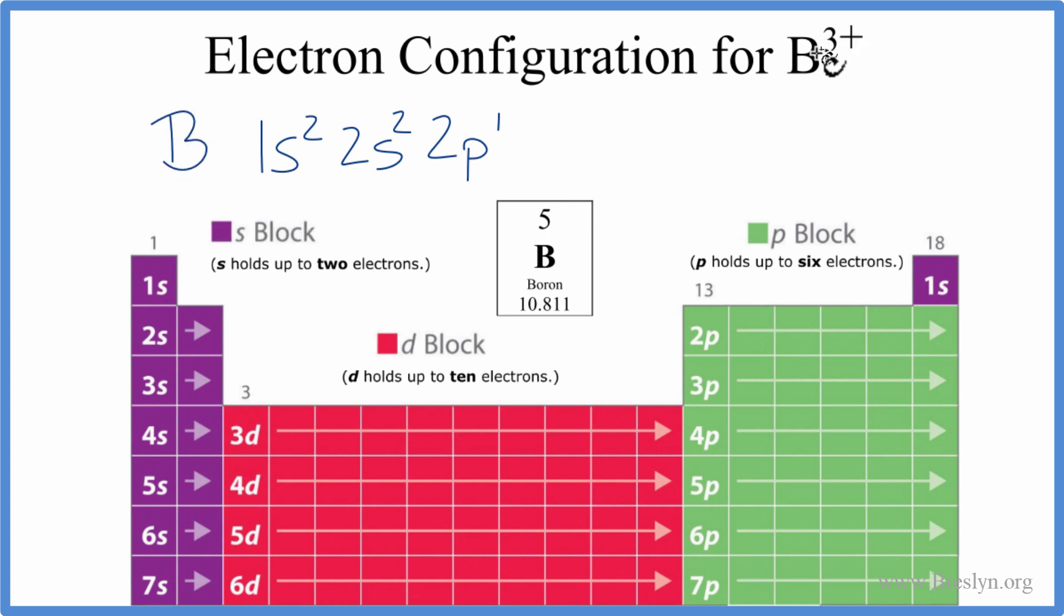But we want to do B3+, the boron ion. So, to get from boron to B3+, that means you've lost three valence electrons. So, you lose electrons. If they're negative, you become positive. If you lose three electrons, you get a 3-plus charge.